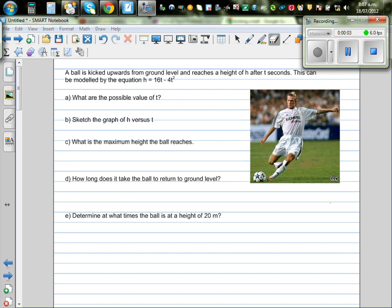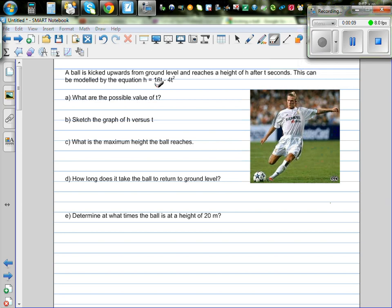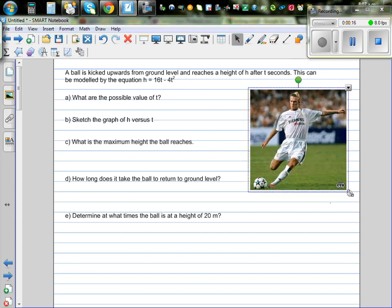A ball is kicked upwards from the ground level and reaches a height h after t seconds. This can be modeled by the equation h equals 16t minus 4t squared. Now this image I've googled, so this is a footballer.